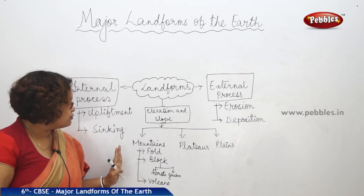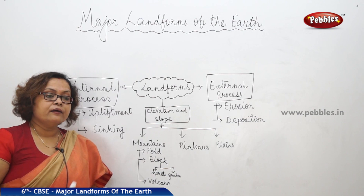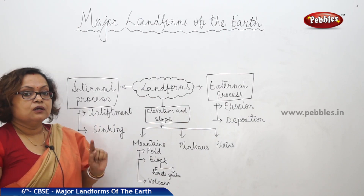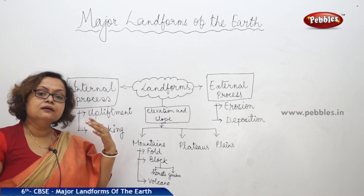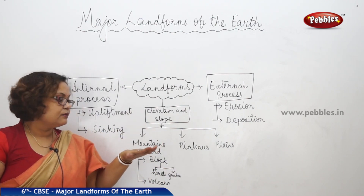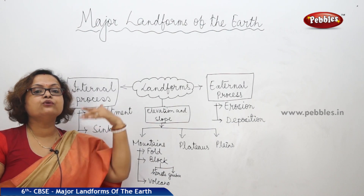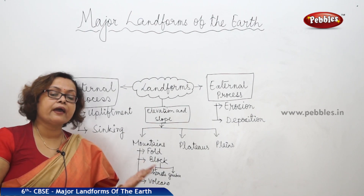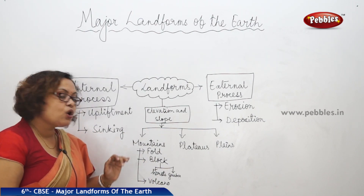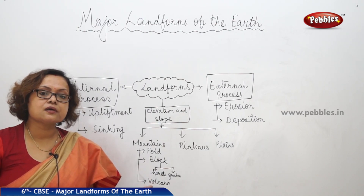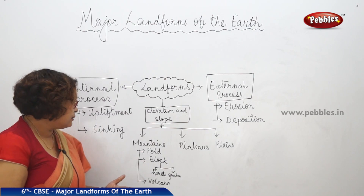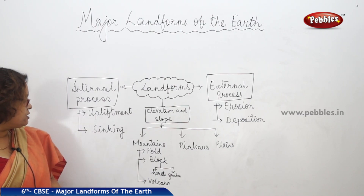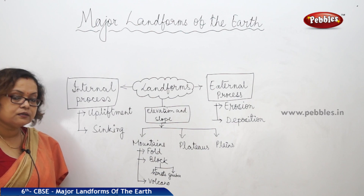Coming to mountains — we have the Himalayan mountain, which stands as a security guard for India. We also have the Aravalli mountain in the middle part of India, almost dividing India into North and South. We have the Western Ghats and Eastern Ghats as well. Mountains have different characteristics and are majorly of three types: fold mountains, block mountains, and volcanic mountains.